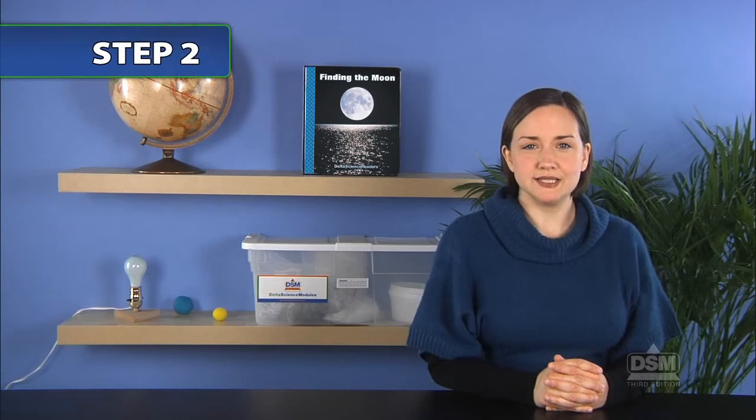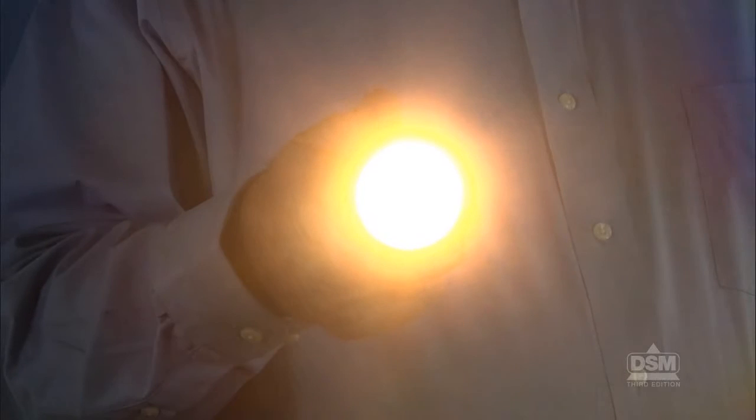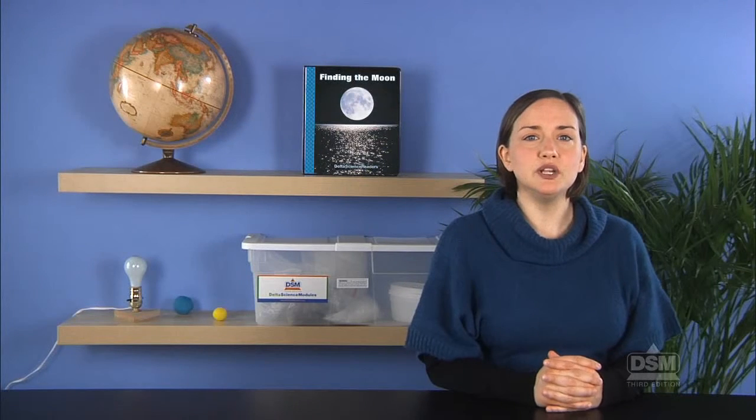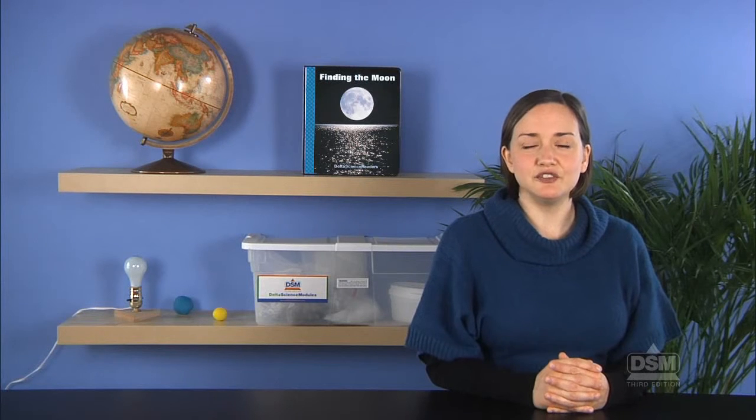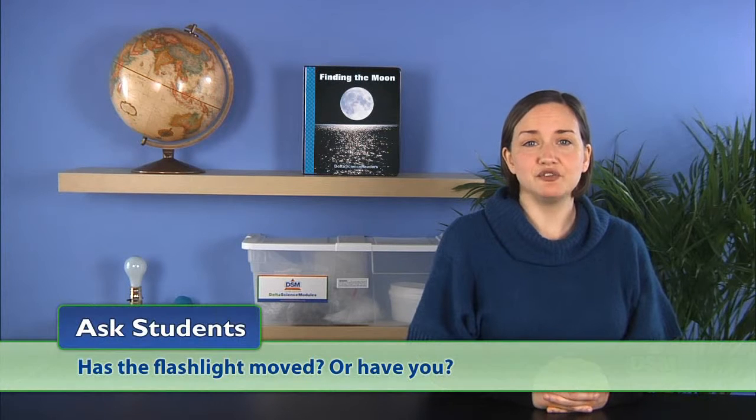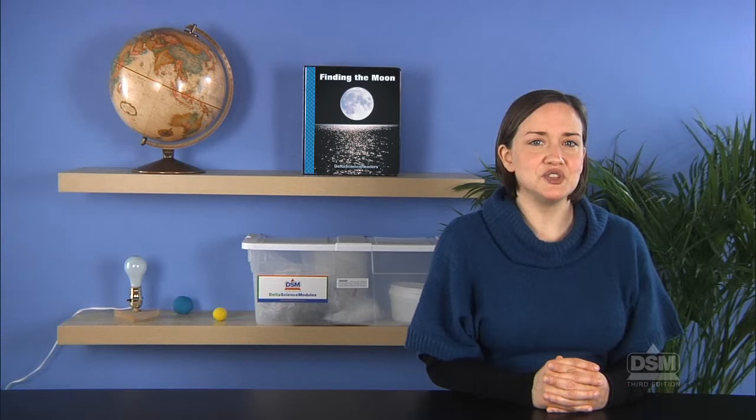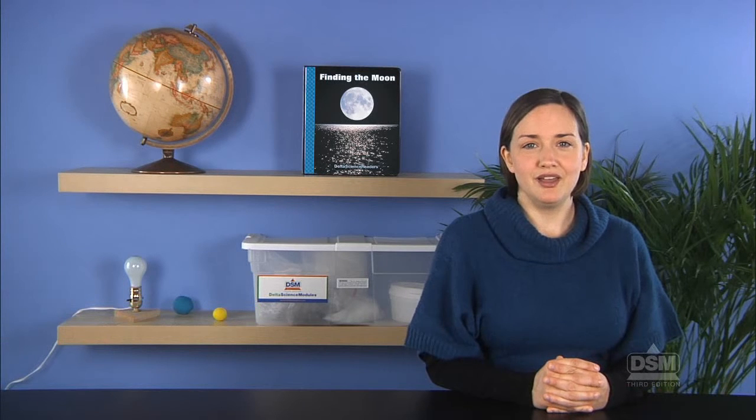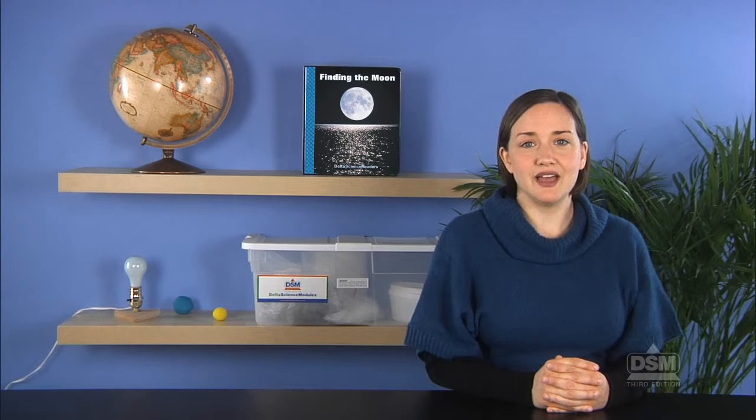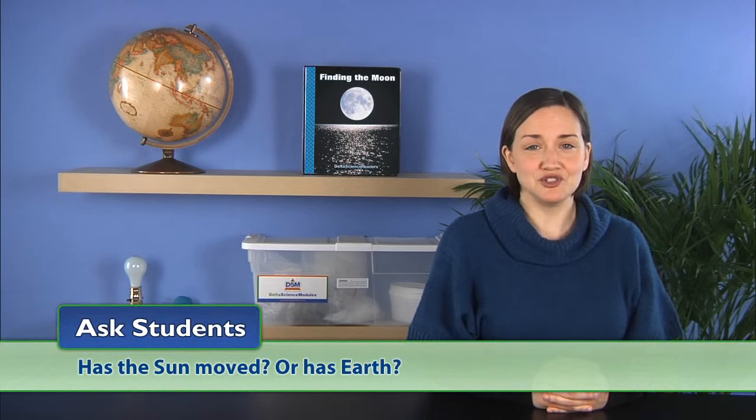Turn out the classroom lights. Have students stand at their desks facing you while you stand in front of the room, shining a flashlight towards students. Then tell them to turn slowly around until their backs are to you. Ask students if they can see the flashlight now. They cannot. Ask students: Has the flashlight moved or have you? Tell students to imagine that the flashlight is the sun and they are Earth. Repeat the activity. Then ask: Has the sun moved or has Earth? Students should observe that Earth moved.